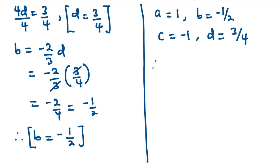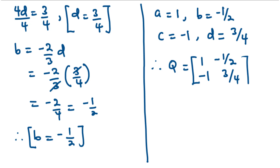Therefore, matrix K is equal to 1, negative 1 over 2, negative 1, 3 over 4. That's it for today's video. Thanks for watching, and see you in the next video. Bye-bye.